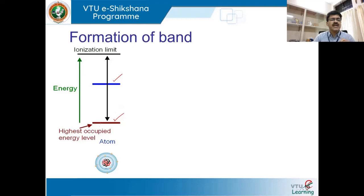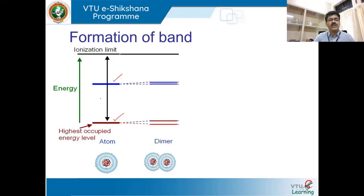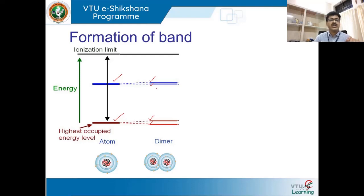In an atom, electrons are generally in the ground state. When the atom is given a certain amount of energy, electrons are excited and ionized. Now suppose a second atom is brought closer. When the second atom is brought closer, the energy levels of each level are going to split into two — every energy level splits into two discrete levels. Classically this splitting is not explained; classically energy levels are said to be continuous.